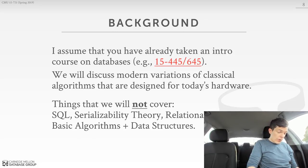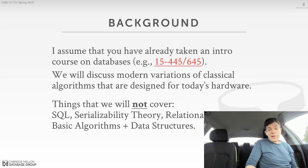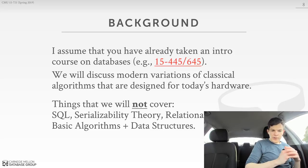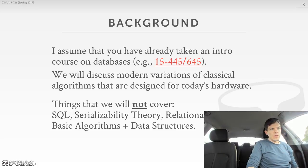The background I expect you to have is that I'm assuming you've already taken some kind of introductory course on database systems. At Carnegie Mellon University, this would be 15-445 or 6-45, or any introductory course at your undergraduate institution. You need this background because when we start talking about things like join algorithms, I'm going to assume you understand the classic implementations described in textbooks. Now we're going to talk about how to do this on modern hardware — parallel cores, vectorization instructions, and things like that. So we're not going to cover how to write SQL, serializable theory, relational algebra, or basic algorithms; I'll assume you understand all these things so we can jump right into the more advanced topics.